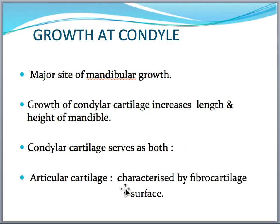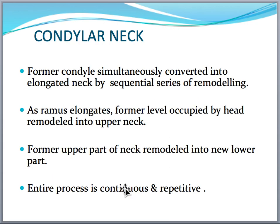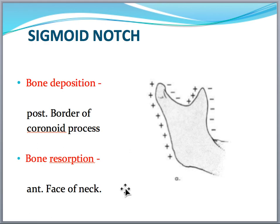Describe how growth at the condyle takes place — the articular cartilage and the growth cartilage. The remaining growth cartilage acts as a secondary cartilage for the rest of the growth period. Because of this region, functional appliance treatment can be performed in orthodontics — this clinical implication must be included when discussing condylar growth. Next, the condylar neck should also be explained — how it becomes incorporated into the ramus and takes on its characteristic neck shape.